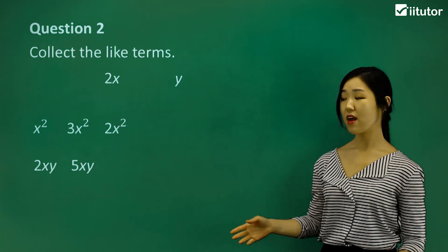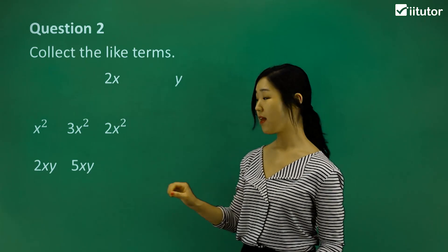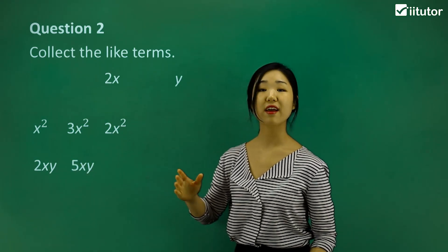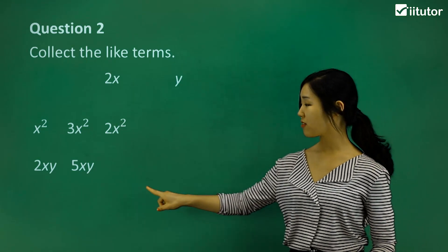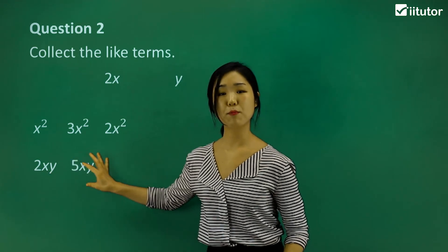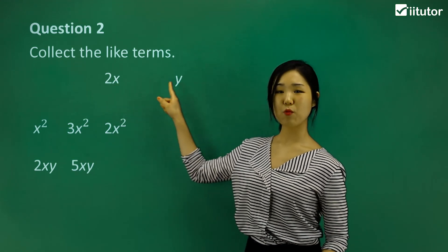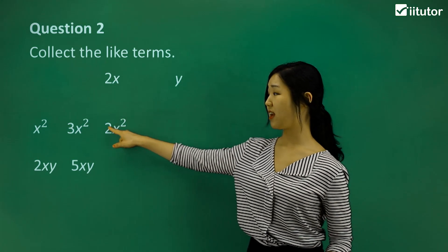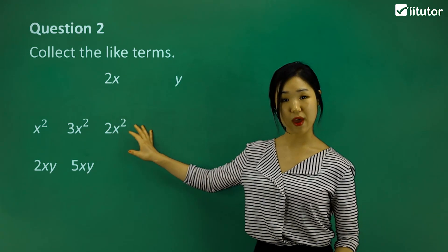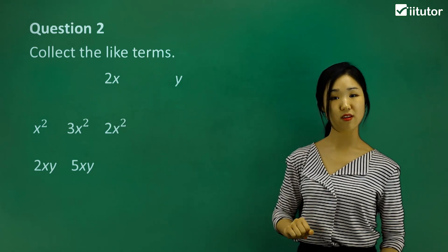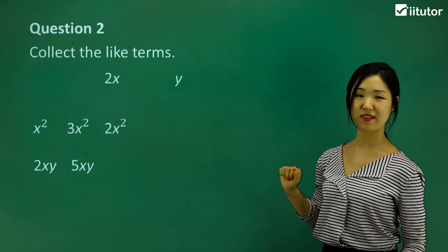The x squares all end in x squared, so I group those together. These both end in xy, and xy itself is one variable — one like term. So those are also like terms. But x and xy are not the same. A lot of people think x squared and x are also like terms — they're not. x squared and x are completely different, they don't look the same. So those are the odd ones out.